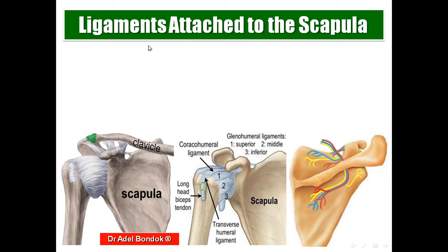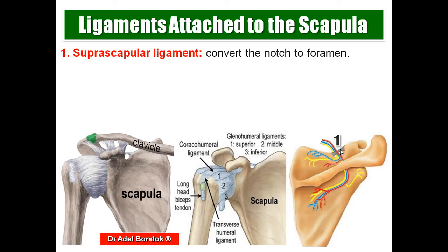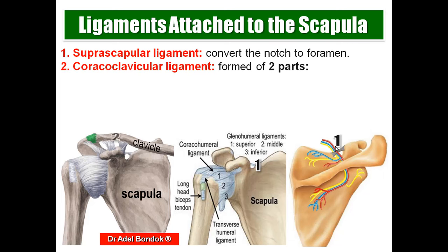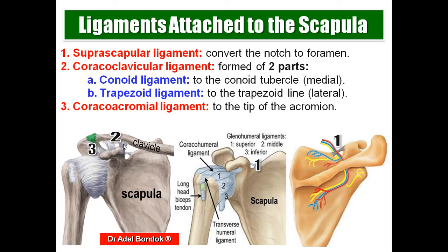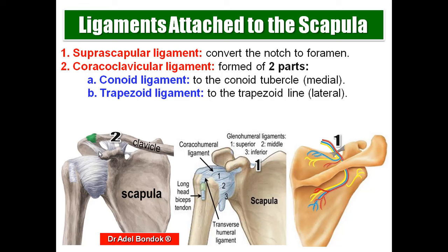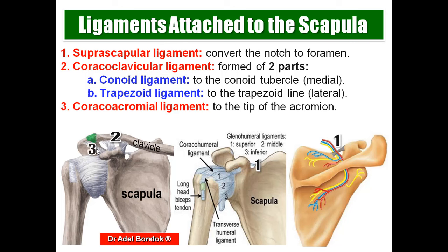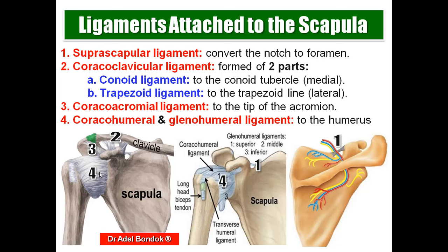The ligaments attached to the scapula: the suprascapular ligament converts the suprascapular notch into a foramen — the suprascapular nerve passes through the foramen while the suprascapular artery passes above the ligament. The second ligament is the coracoclavicular ligament, formed of two parts: the conoid ligament (medial) and the trapezoid ligament (lateral). The third is the coracoacromial ligament, between the coracoid process and the acromion. Additionally, glenohumeral and coracohumeral ligaments are ligaments of the shoulder joint.